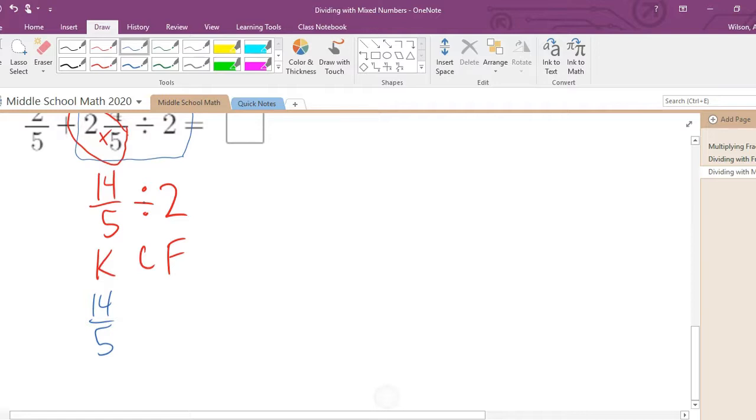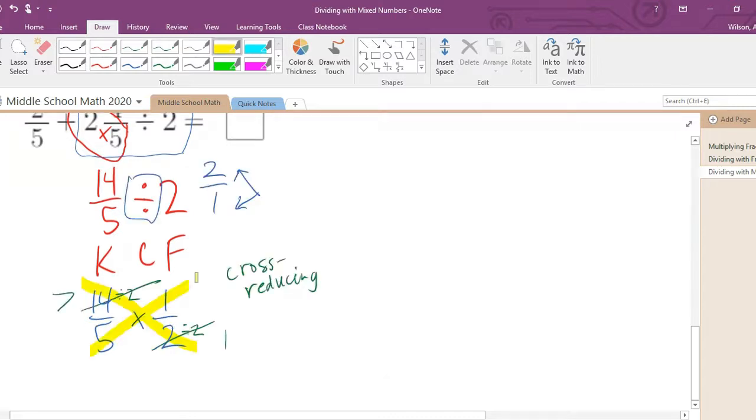And then two, we're supposed to use the reciprocal of two or flip it. Remember, two is really two over one. So we need to flip the numerator with the denominator and that becomes one half. So now we're actually doing fourteen fifths times one half.